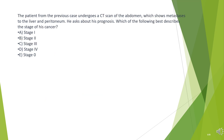The patient from the previous case undergoes a CT scan of the abdomen, which shows metastases to the liver and peritoneum. He asks about his prognosis. Which of the following best describes the stage of his cancer? A. Stage 1. B. Stage 2. C. Stage 3. D. Stage 4. E. Stage 0.